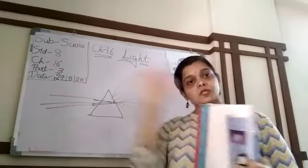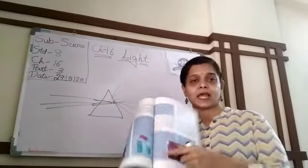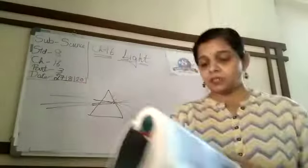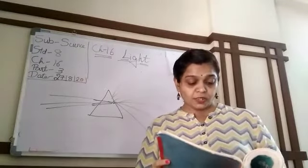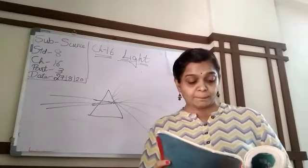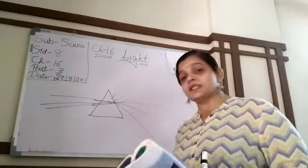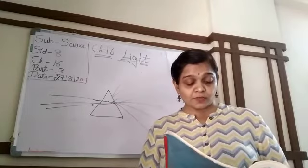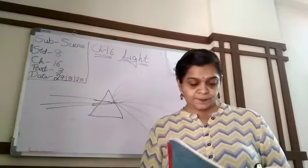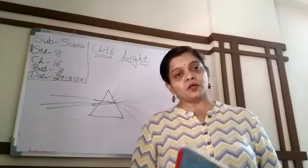When light passes through a prism, it splits into 7 colors — this is also called dispersion of light. Now, the activity: get a plain mirror of a suitable size, place it in a bowl as shown in the figure, and fill the bowl with water. Put this arrangement near the window.